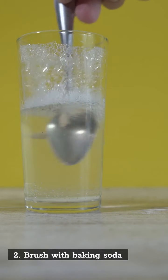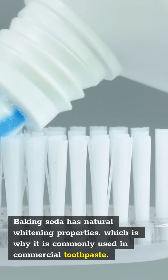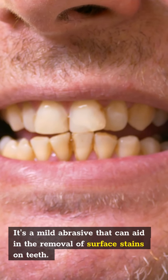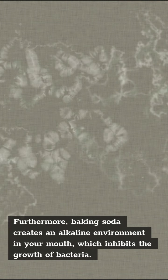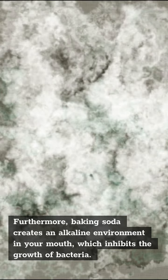Number two, brushing with baking soda. Baking soda has natural whitening properties, which is why it is commonly used in commercial toothpaste. It's a mild abrasive that can aid in the removal of surface stains on the teeth. Furthermore, baking soda creates an alkaline environment in your mouth which inhibits the growth of bacteria.